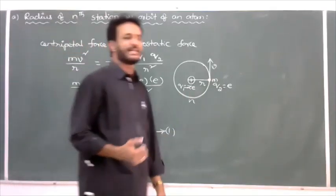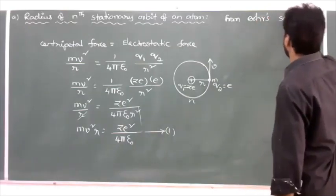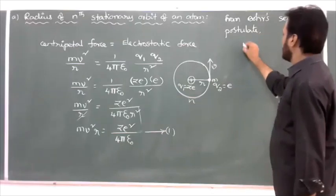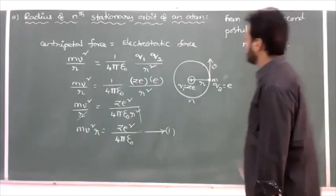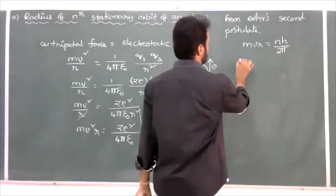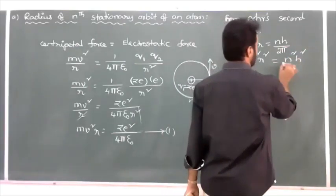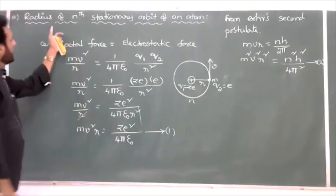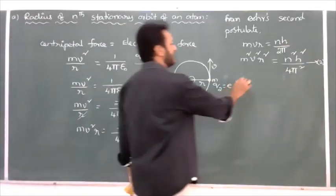From Bohr's second postulate, the angular momentum in the nth orbit is mvr = nh/2π. Squaring both sides: m²v²r² = n²h²/(4π²). That is equation two. To derive the formula for radius of the nth stationary orbit, divide equation two by equation one.